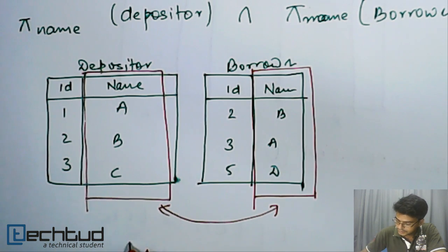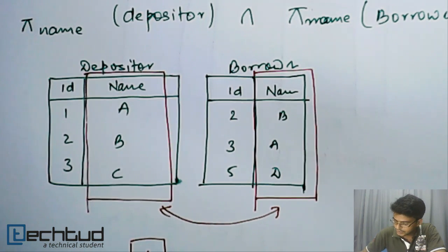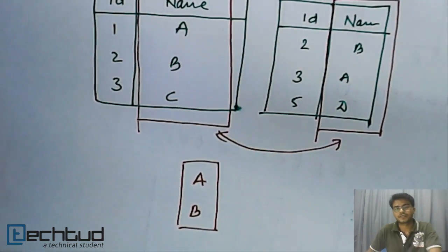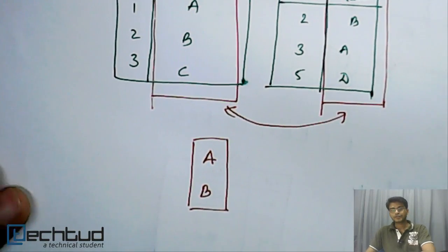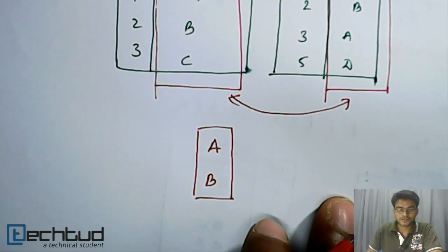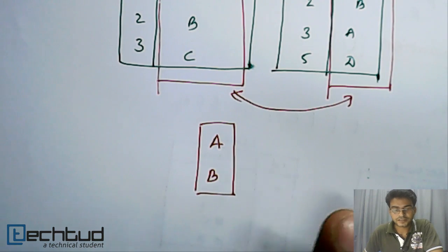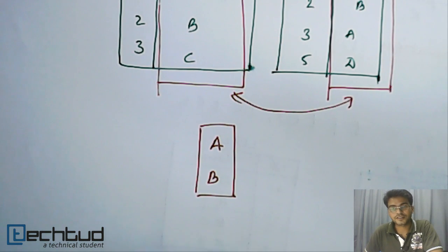So these two will be returned. So this is our intersection. I hope this is clear. Let's understand another thing which is set difference in the next video. Thanks for watching, thank you.